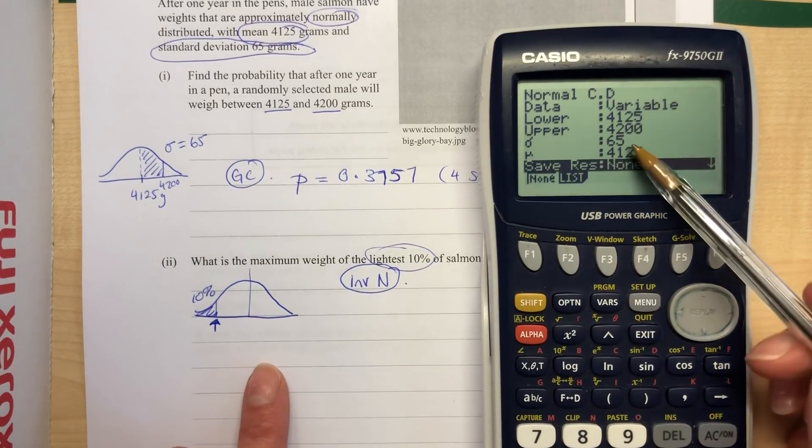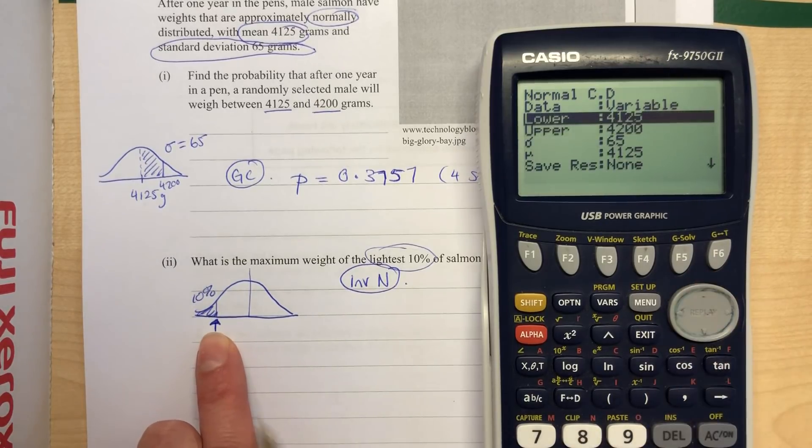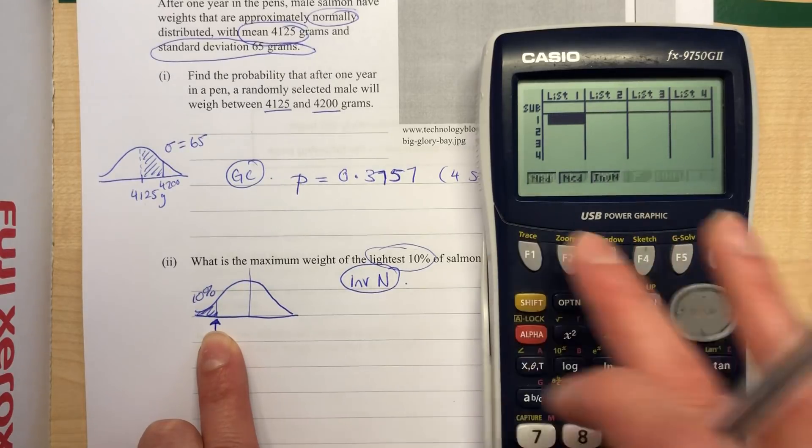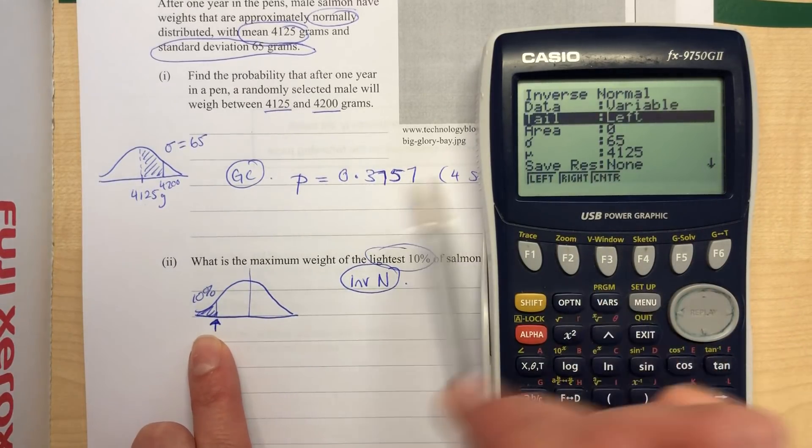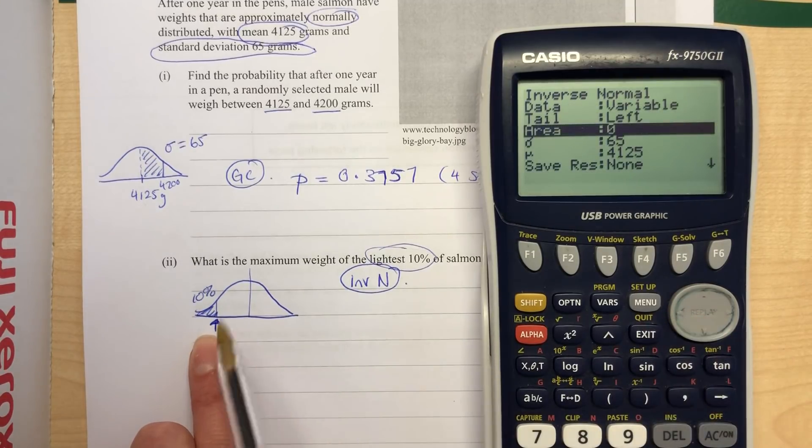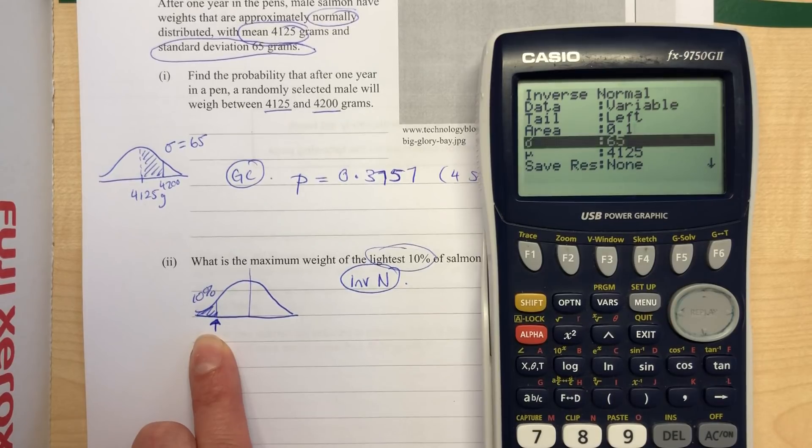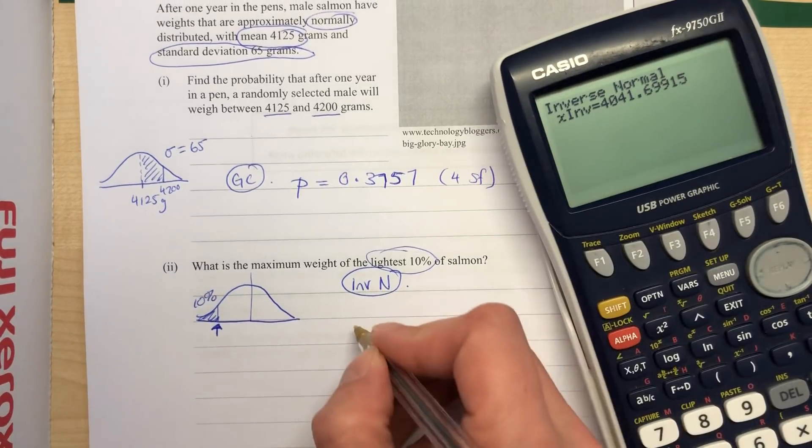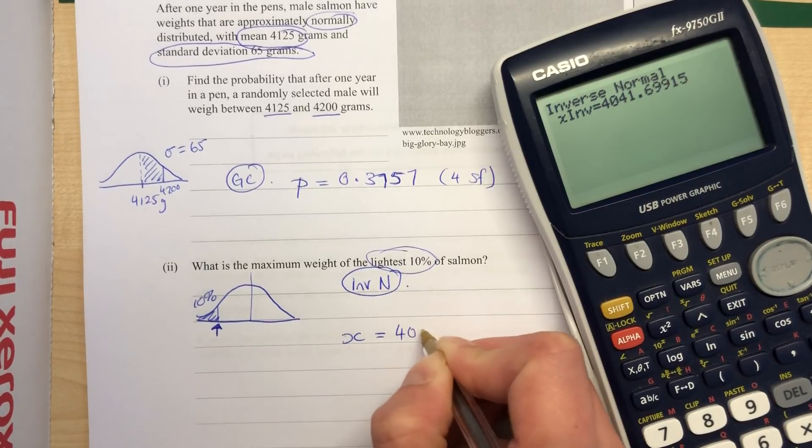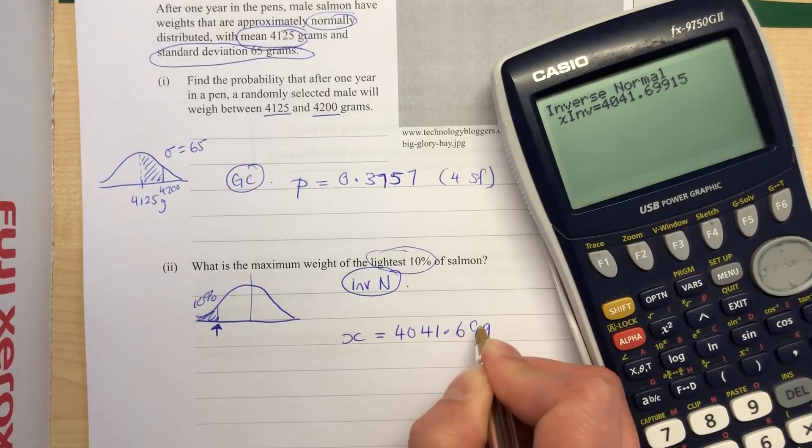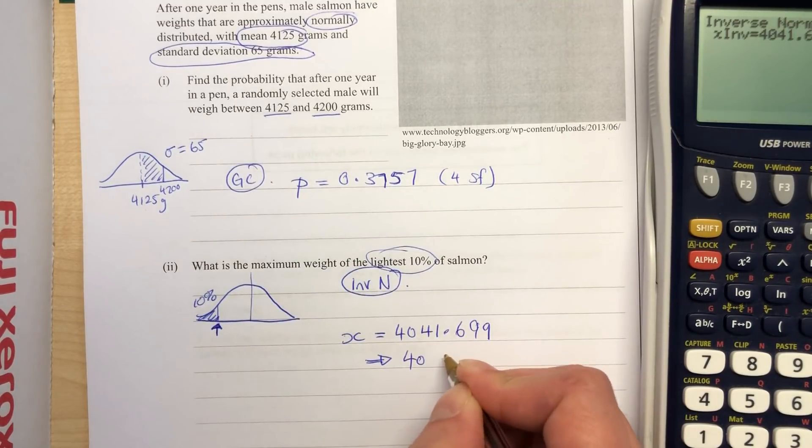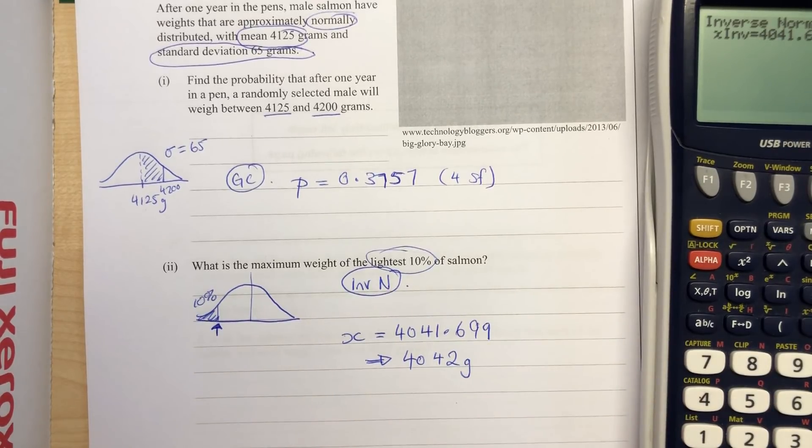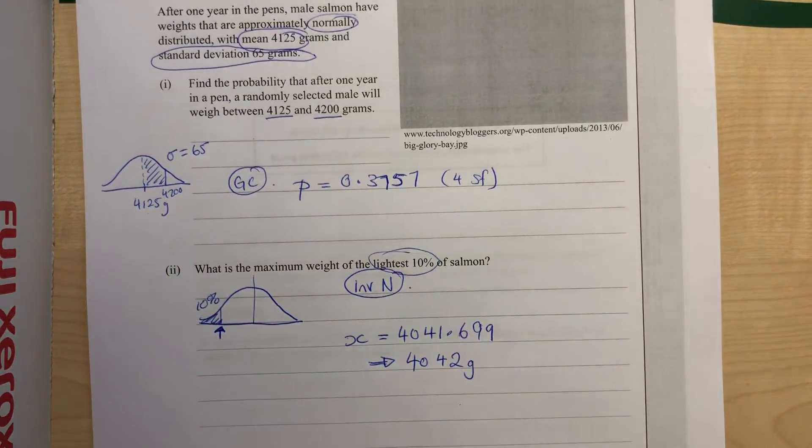So back here, we haven't changed any of the sigma and the mean. But we have changed the portion we're looking at. So our lower limit, we'll just go back to here, we're going to select inverse normal. Now make sure this is saying variable again, we've got a left hand tail. The area is 10%, which we have to put in as decimals, 0.1. And the mean and the standard deviation haven't changed. Okay, so I've entered those things. And our inverse normal gives us a x value of 4041.699. And I'm going to write that rounded up sensibly. So we're talking about grams. So I'm going to go for 4042 grams.